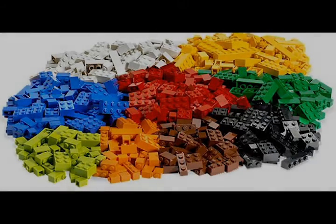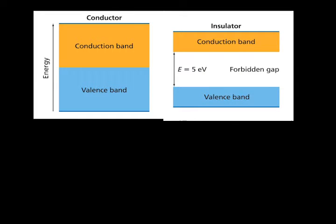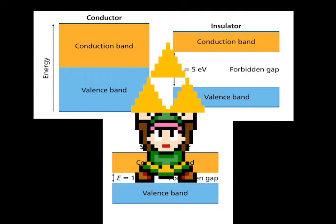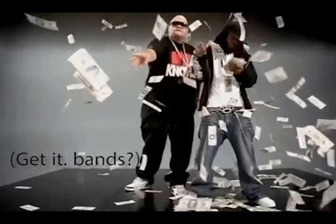We're going to start with the smallest LEGO pieces first. There are three main categories of these, which are conductors, insulators, and semiconductors, and each of these three categories all behave in different manners. To really understand why that is, we would have to look at their band theory diagrams.